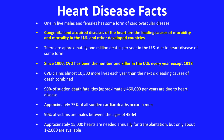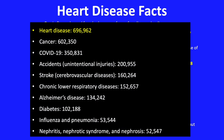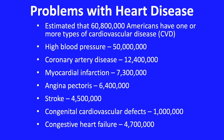Before COVID, heart disease was the number one killer in modern societies. One in five males and females has some form of cardiovascular disease. Since 1900, cardiovascular disease has been the number one killer in the US every year except 1918, the year of the Spanish flu pandemic. Even considering COVID, heart disease remains the number one killer in our society. It is estimated that over 60 million Americans have one or more types of cardiovascular disease.